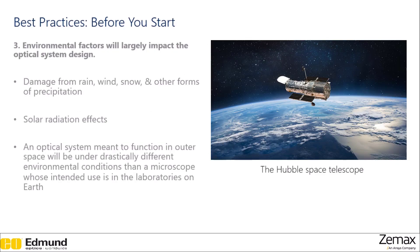Additionally, consider the environment that your product is going to be operating in. Does it need to be resistant to rain, wind, snow, and other forms of precipitation? Is it going to be operating high in the atmosphere where you need to consider solar radiation? Is your optic meant to function outdoors in a climate where temperatures oscillate a lot, like in a desert? In this case, you need to consider if your materials are resistant to large changes in temperature, since many optical materials expand and contract with temperature changes and quick changes can damage some optics. Making sure you understand these environmental factors will help with durability and designing high quality products.